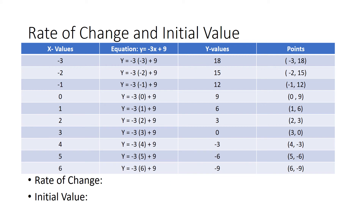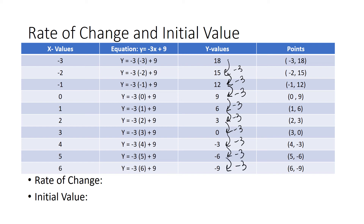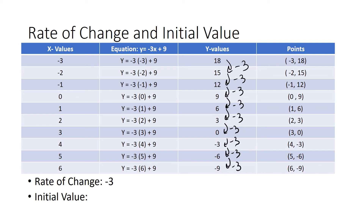To find the rate of change, you need to look at the y value column. The rate of change means how much the data is changing by. Looking at our y values, I can see that I am changing by negative 3 each time. 18 minus 3 gives me 15, 15 minus 3 gives me 12, 12 minus 3 gives me 9, and so on. Because we are changing by negative 3 each time, my rate of change is negative 3.